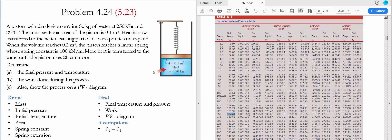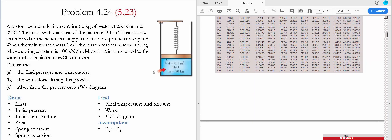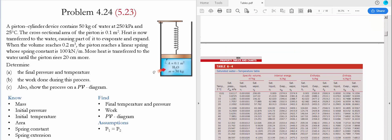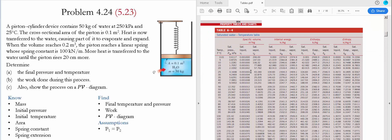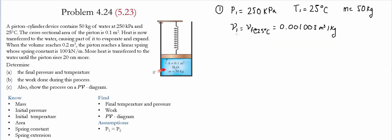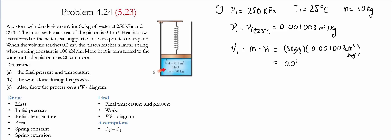To find the specific volume for this state we go to Table A4 for a temperature of 25 Celsius. We find that the specific volume is the value of v_f at that temperature, which is 0.001003 meter cubed per kilogram. Using this value, the initial volume is mass times specific volume: 50 kilograms times 0.001003 meter cubed per kilogram, giving an initial volume of 0.05 meter cubed.